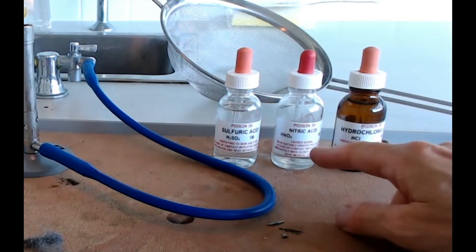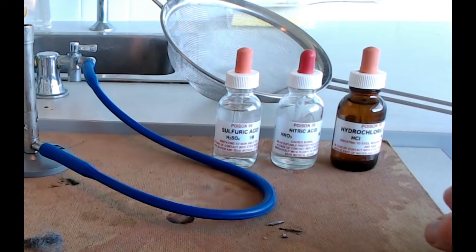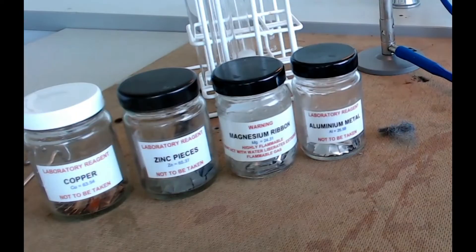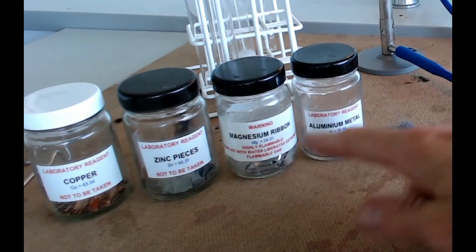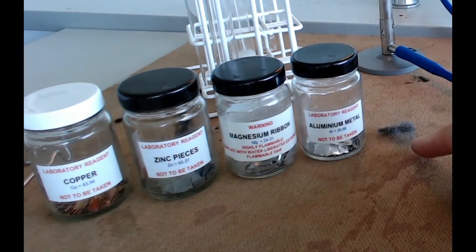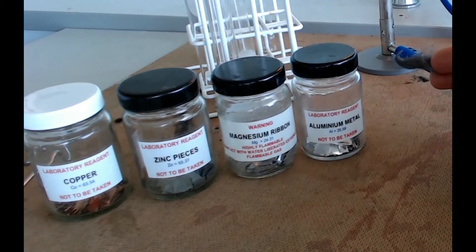So we've got sulphuric acid, nitric acid and hydrochloric acid. And you're going to need some metals which are copper, zinc, magnesium, aluminium and iron. And the iron is in the form of steel wool.